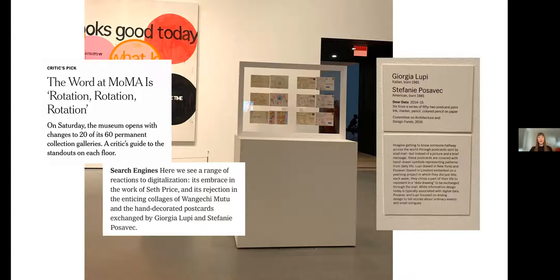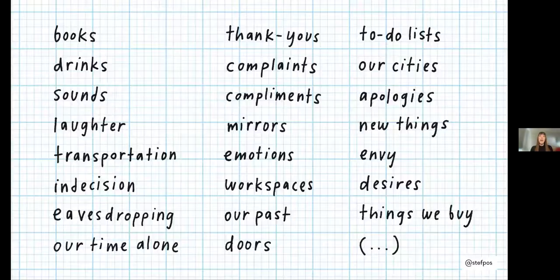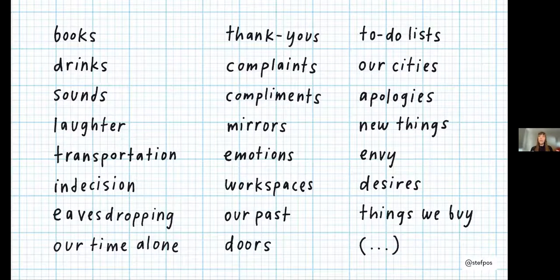Ben very kindly called it a movement, and what's really exciting about the project is that this really manual domestic way of introducing people to data resonated with them. People of all ages started correspondence projects of their own, using it as part of their teaching materials from primary school to university and beyond, to help students learn to collect and present data. This wide audience connected with the project in a way we never anticipated — we think it's because the small scale we were working on really opened the idea of data to a wider audience and made it more approachable. It looked at domestic and often mundane data that most people could relate to, and showed that data doesn't always have to be scary or intimidating.